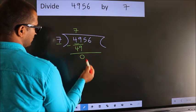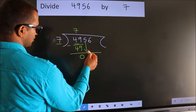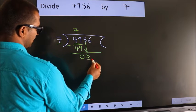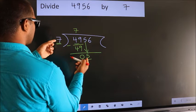After this, bring down the beside number. So, 5 down. Here we have 5, here 7. 5 is smaller than 7.